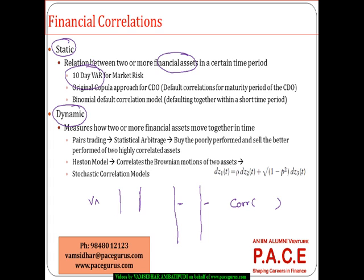When I am saying 10-day value at risk, it is computed by taking 10-day data at a time, and one single day value at risk is computed and that is multiplied by the square root of 10. So when I say static, it does not move day over day — it is computed for a period taken together. Even when we are talking about the original Copula approach for collateralized debt obligations, the default correlations are calculated for an entire maturity period of the CDO — not changing today or tomorrow.